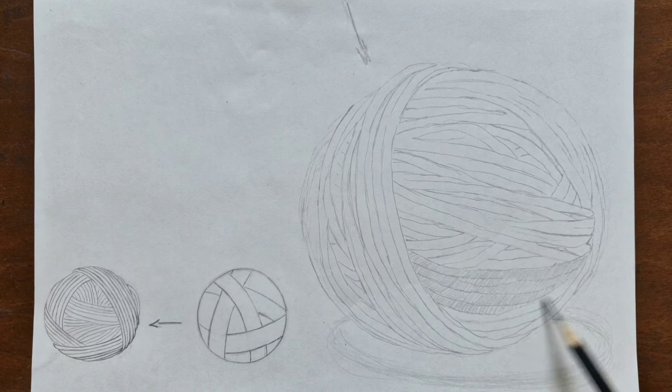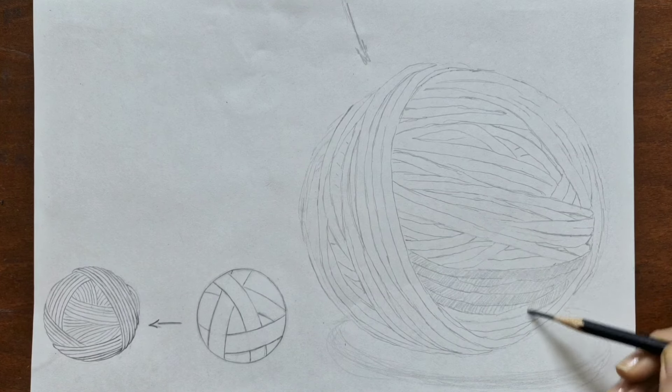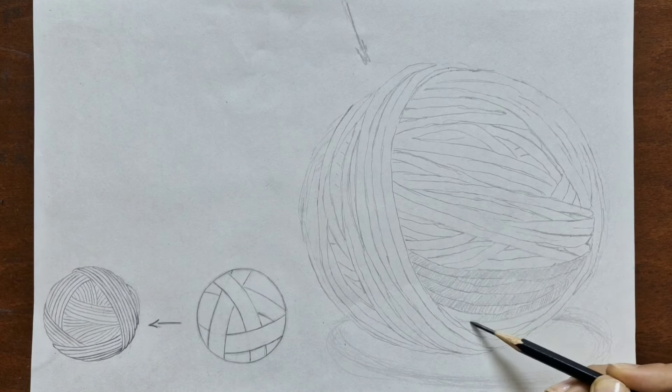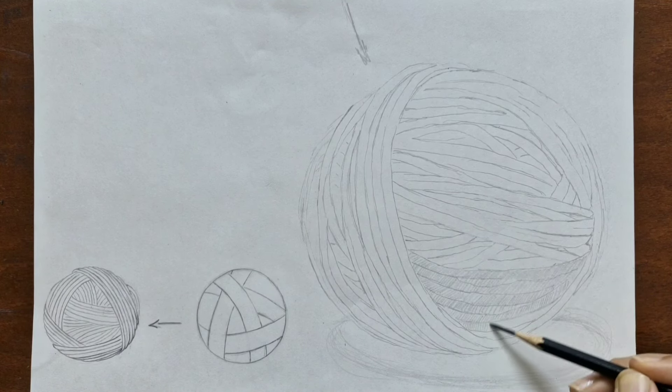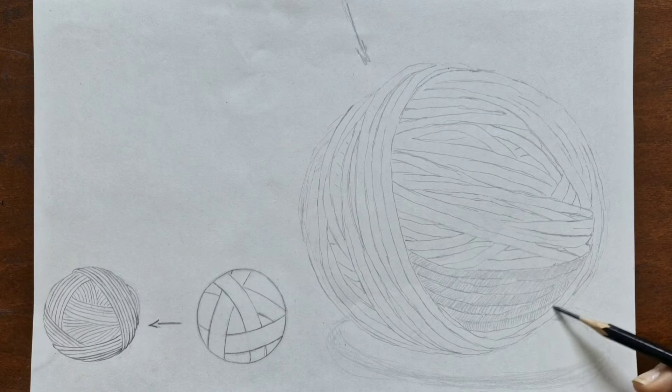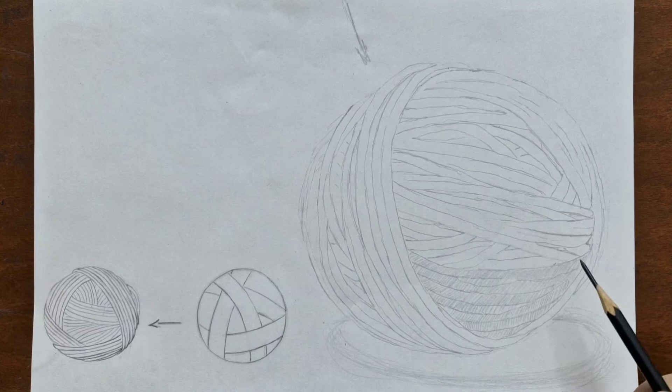You can start shading wherever you like but I like to start with the darkest spots. Even though it's not quite the bottom it's a solid darkest because of the way light bounces back from the surface in the lower areas.